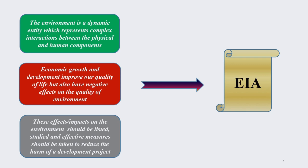What is actually EIA? We know that environment is a dynamic entity, which keeps on changing with time. Environment represents a complex interaction between the physical and human components. We also know that economic growth and development improve our quality of life, but also have negative effects on the quality of our environment — and we have discussed this in great detail in previous lectures.